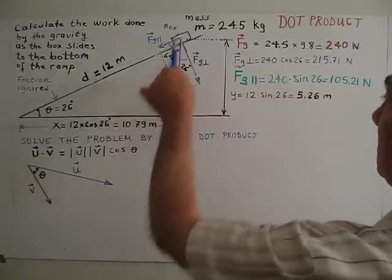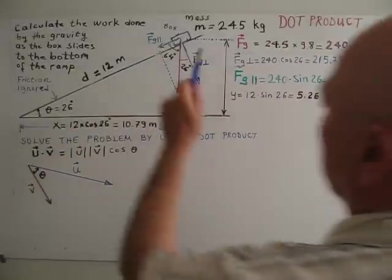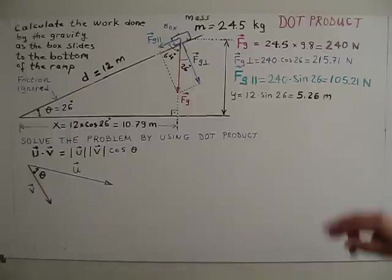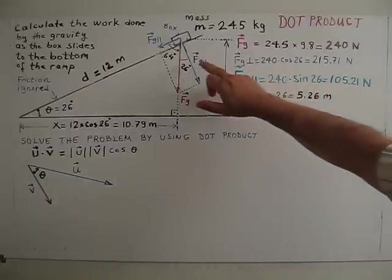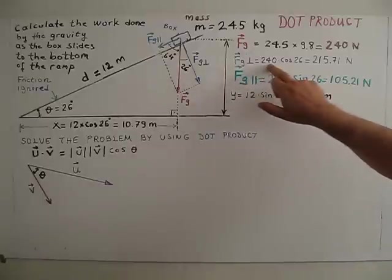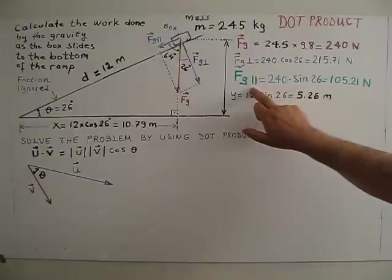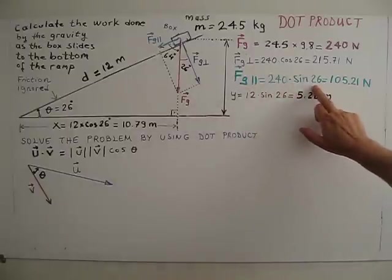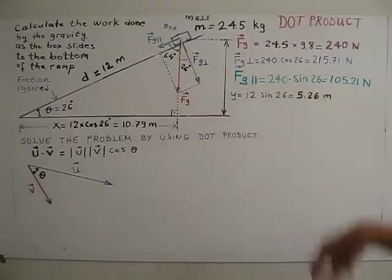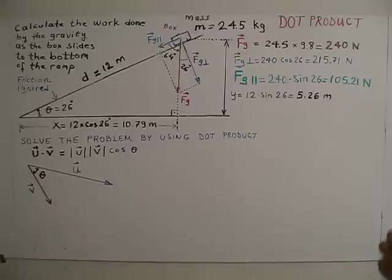Basically, this triangle and this triangle are similar triangles. So, FG perpendicular equals 240 times cosine 26. FG parallel, 240 times sine 26. We get those calculations.